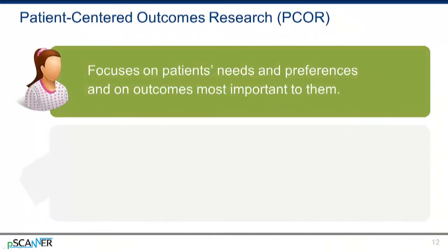The Patient-Centered Outcomes Research Institute, or PCORI, says that PCOR pays attention to two major components. PCORI's first component focuses on patients' needs and preferences and on outcomes most important to them. This includes an individual's preferences, autonomy, and needs. It addresses individual differences and barriers to adopting health practices, implementation, and dissemination. It highlights outcomes that people notice and care about, such as survival, function, symptoms, and health-related quality of life.